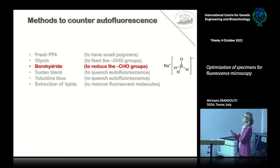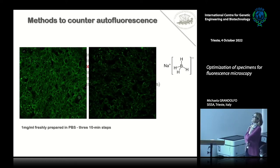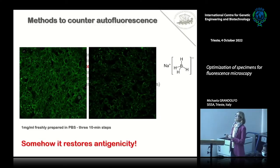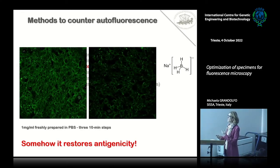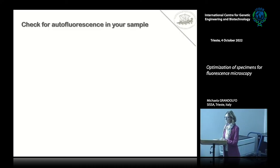I want to spend a few words on sodium borohydrate because it is a very nice strategy to reduce background. Here is a section before treatment with sodium borohydrate and this is after — a dramatic improvement. There is another advantage: sodium borohydrate is also able to restore antigenicity, so it is an unmasking step that can help you to see your antigen better, or to see it at all if you weren't able to before.